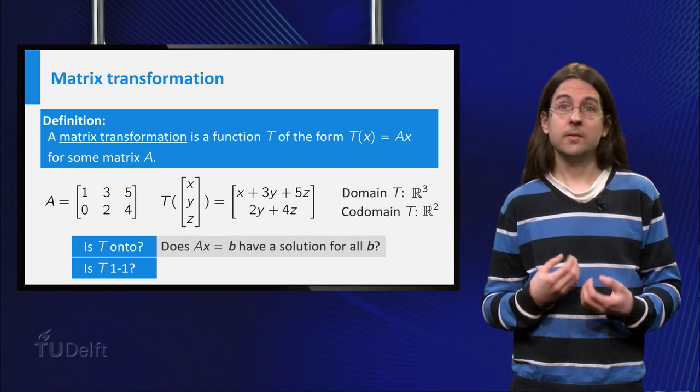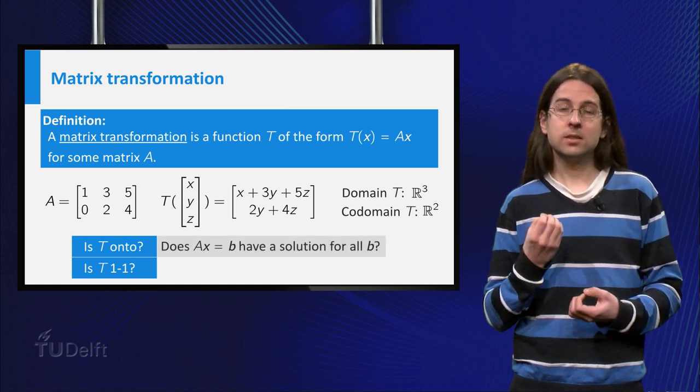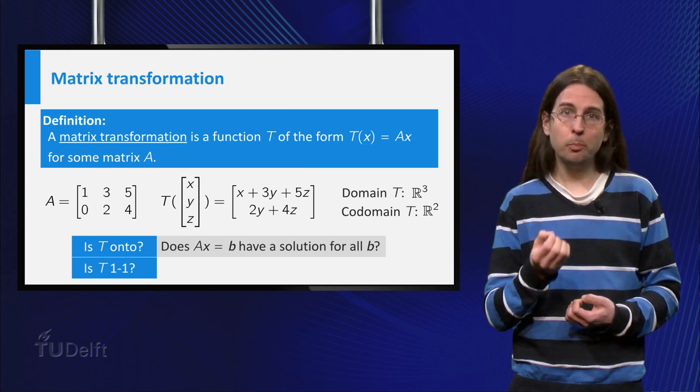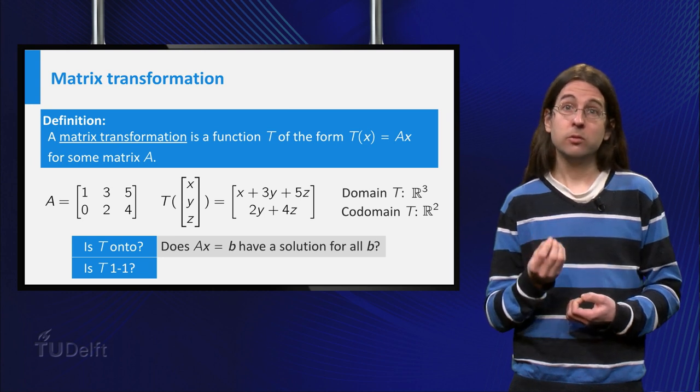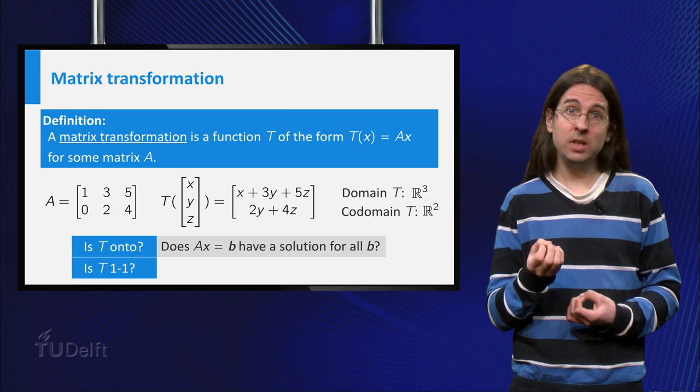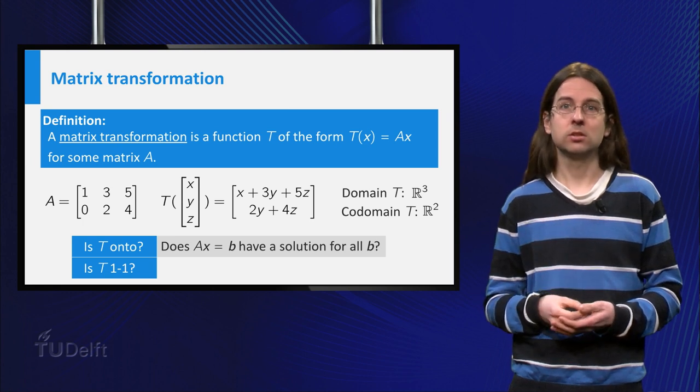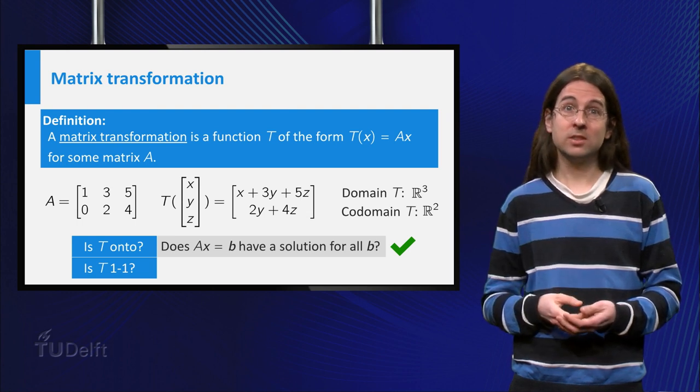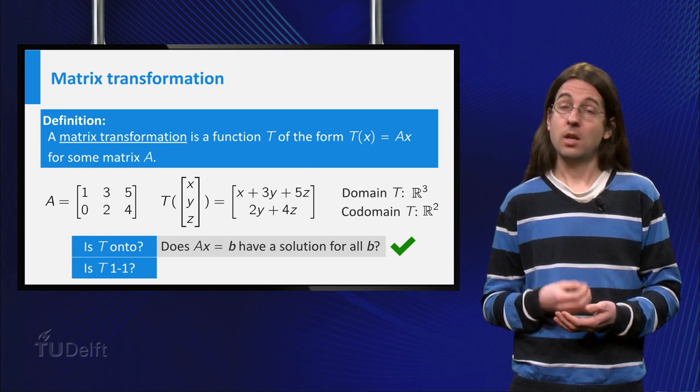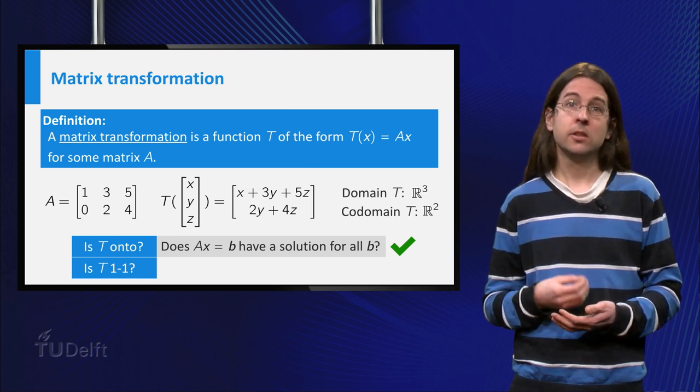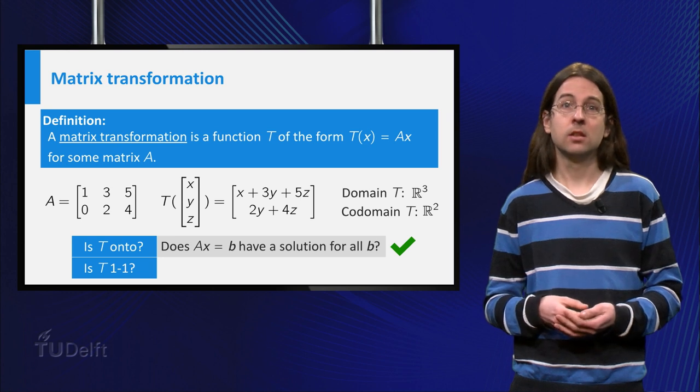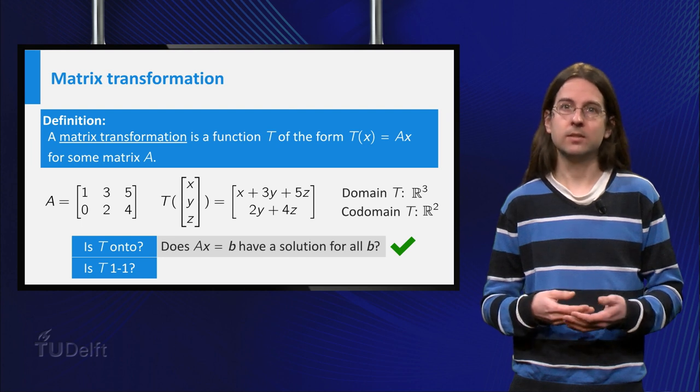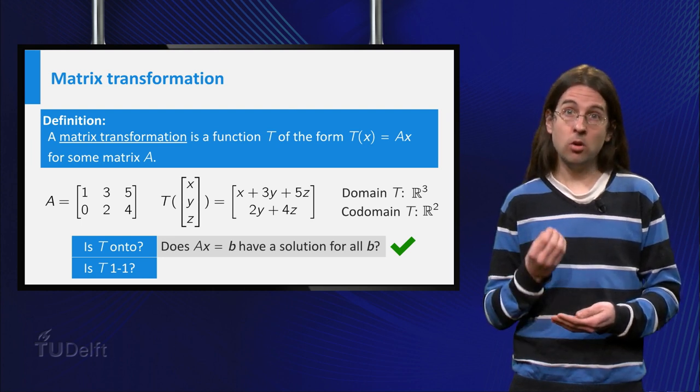The question if the matrix transformation is onto is the same as asking whether T(x) = b has a solution for all possible b. That is, whether the matrix equation Ax = b always has a solution. In this case you see that this is true as the augmented matrix is already in echelon form. Every row has a pivot, so the system can never become inconsistent, regardless of what the right hand side of the equation is. Thus T is an onto function.